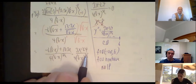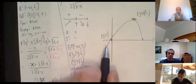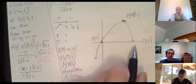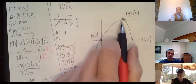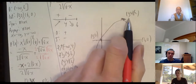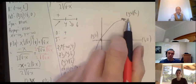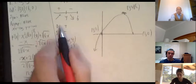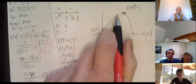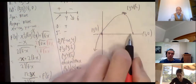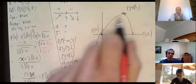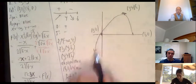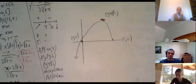The graph passes through (0, 0) and (6, 0), reaches an absolute maximum at (4, 4√2), is always concave down — an upside-down U shape throughout.